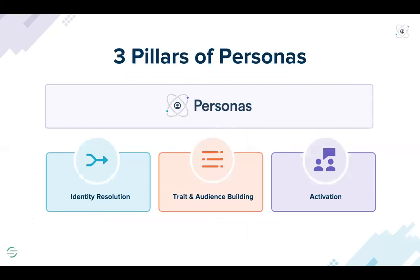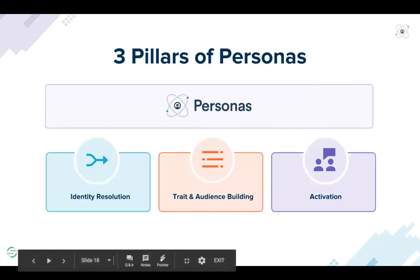There are three key pillars to the Personas product. The first is identity resolution — this helps you know who your users are, no matter which channel they interact with you on. The next is trait and audience building — this helps you identify important user facts, interests, and signals from the heap of raw data and use it to create new traits and audiences. For example, computing a user's LTV from a stream of purchase events is more valuable than that raw data stream. And finally, activation — this enables you to get those traits and audiences into every customer-facing tool you're using, such as Google AdWords and Facebook custom audiences.